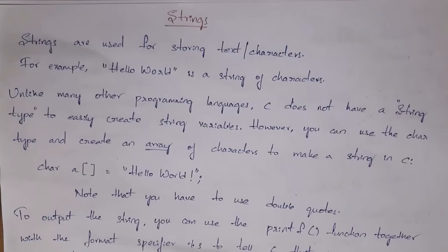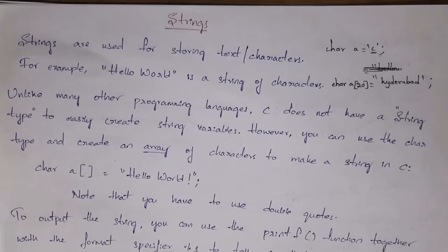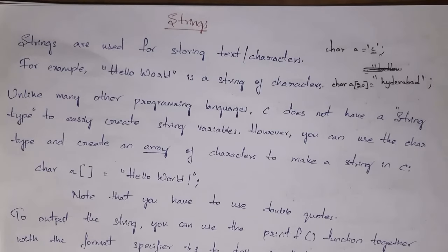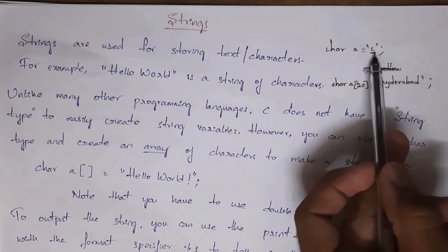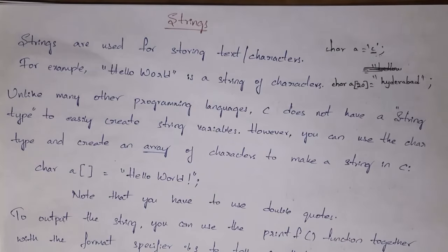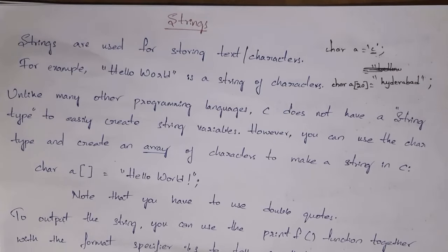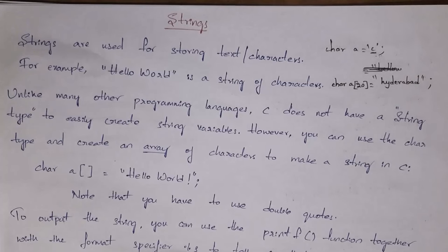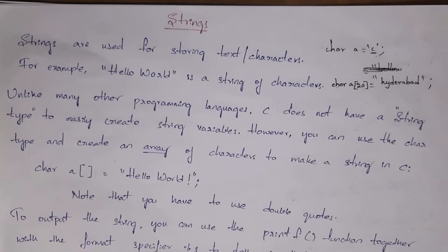Next topic is strings and various string functions. A group of characters is called a string — for example, college, boy, CSE, hello world. By using character data type we can store only a single character, for example: char A = 'C'. But if you want to store multiple characters in a single variable, you use a string. In other languages like Python and PHP there is a string data type, but in C there is no string data type. So to create a string in C you use character data type along with an array. For example: char a[] = "hello world".